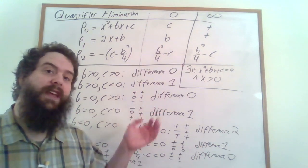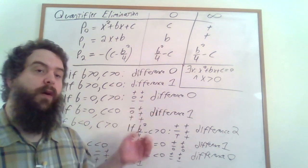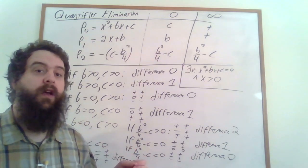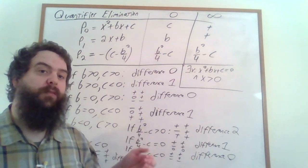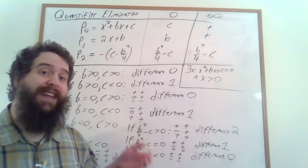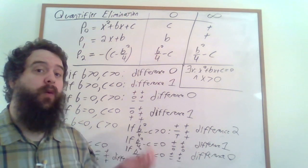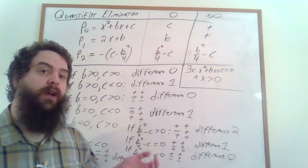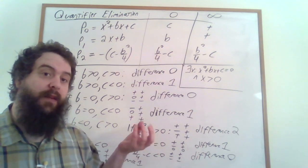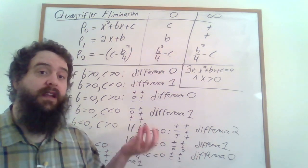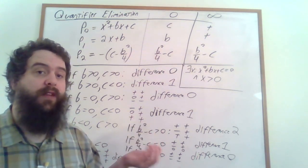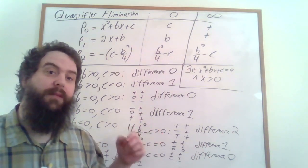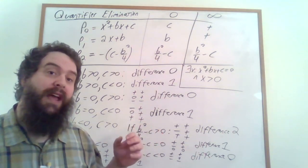Thanks for watching. In the next video, I want to apply quantifier elimination to Pressburger arithmetic. What do we need to add to Pressburger arithmetic in order for it to have quantifier elimination? And what can that tell us about the predicates that we can define in first-order logic over Pressburger arithmetic? If you have any questions or comments, please leave them down below, and I hope to see you then!